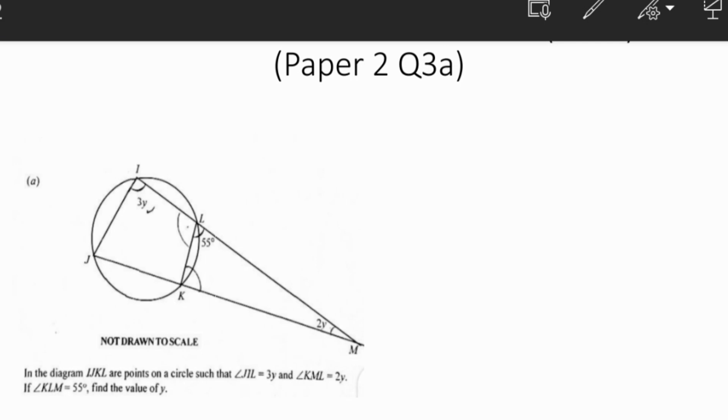Angle JKL and angle JIL, which is marked 3Y, are opposite angles of a cyclic quadrilateral. So they sum up to 180 degrees because they are supplementary. So we can state that angle JKL equals 180 degrees minus 3Y.